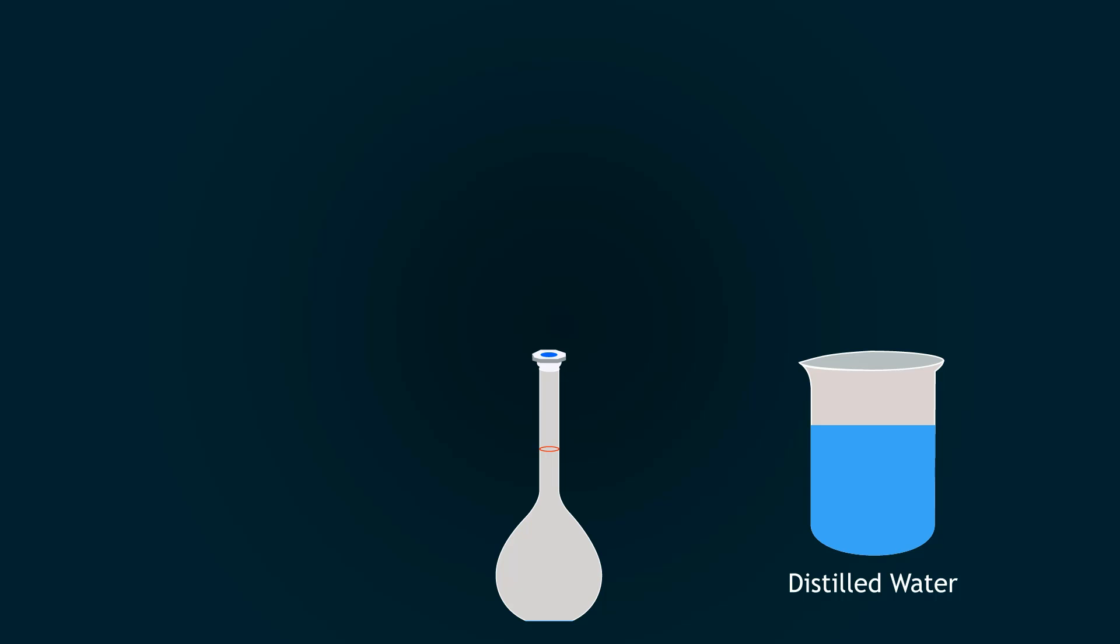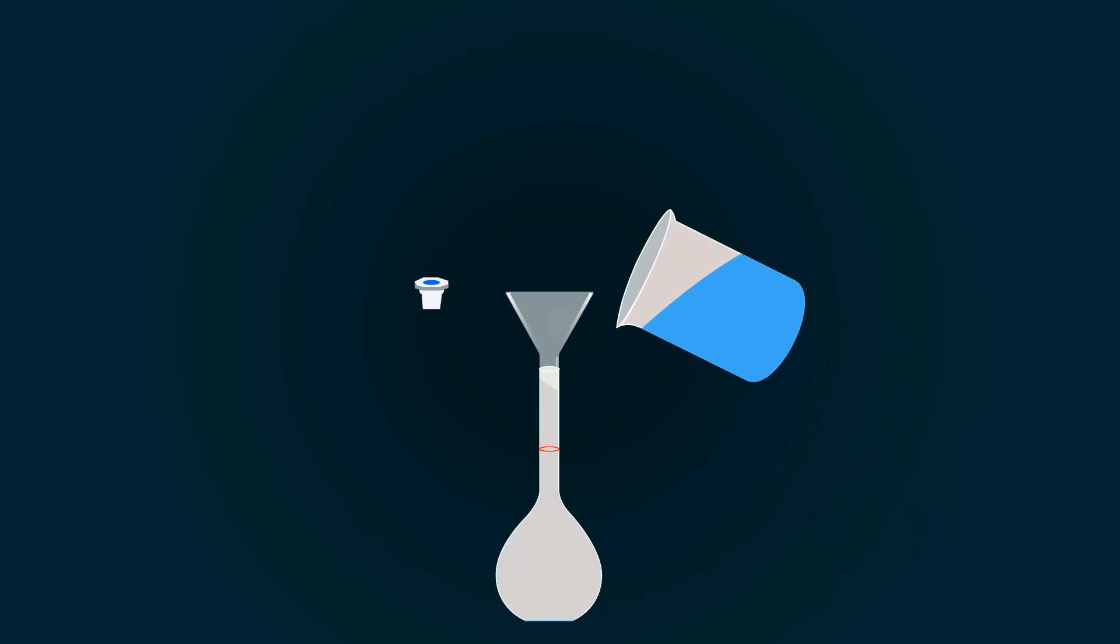First of all, take a measuring flask and add some distilled water into it with the help of a funnel. Please do not add hydrochloric acid directly into the flask because it may harm you or the flask.